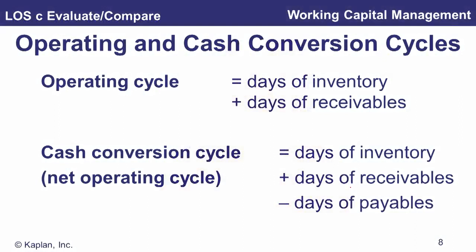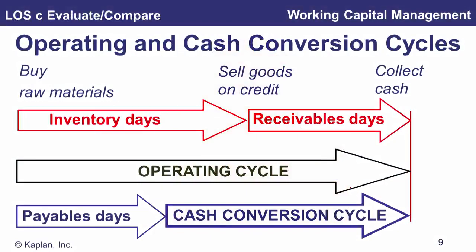The operating cycle is how long cash is tied up in operating assets — it's inventory days plus receivable days. The cash conversion cycle, also known as the net operating cycle, also accounts for payables days. So if cash is tied up in inventory for 30 days and receivables for another 30, but you didn't pay suppliers for 20 days, the cash conversion cycle is reduced by those 20 days.